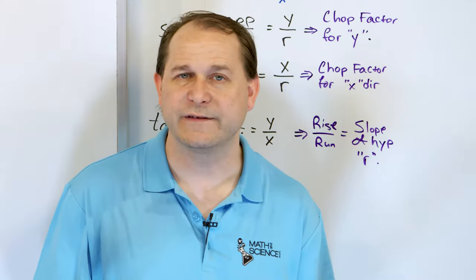This chopping concept is critically important — we'll use it extensively later when we study vectors, which appear everywhere from space probes to building bridges to electronics. The reason it works is algebraic: sine is defined as opposite over hypotenuse, so multiplying by the hypotenuse cancels it and leaves the opposite side. Same logic applies to cosine and the adjacent side.